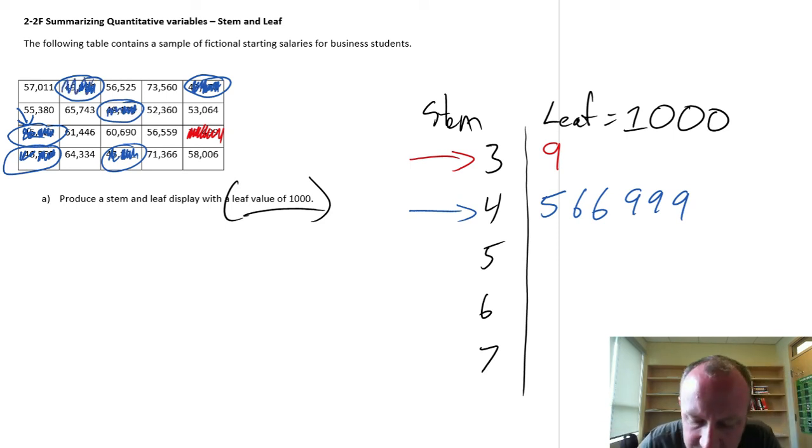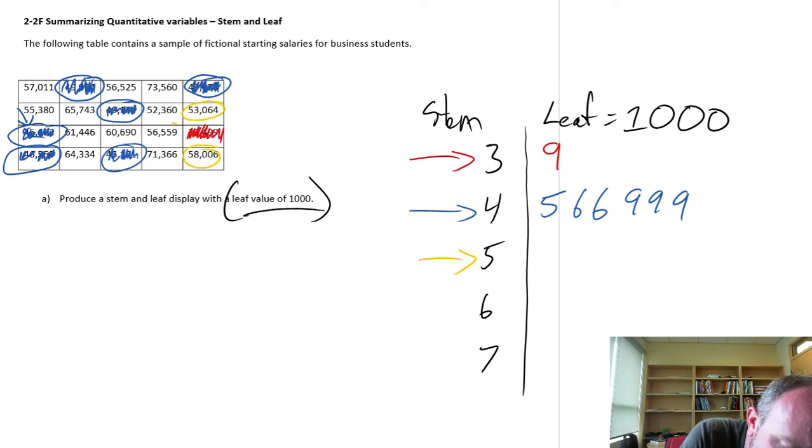Our next stem is the 5. So I go through the same exercise here. Find all of my data points whose first digit is a 5. I think that's it. And I'm just going to scribble out those last three. We can ignore those.